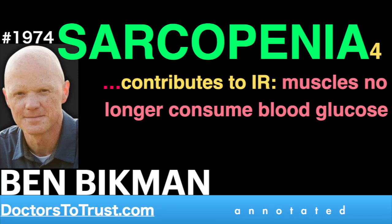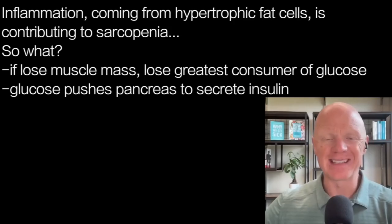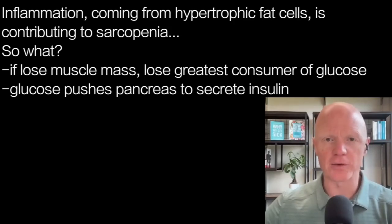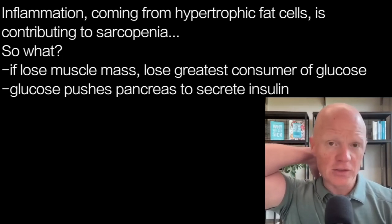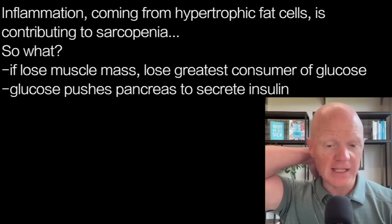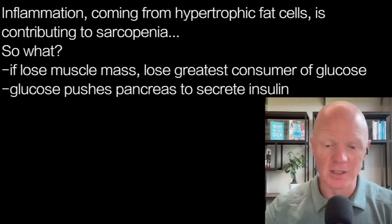Independent of insulin resistance, we have the overall metabolic milieu with the inflammation coming from the hypertrophic fat cell that is independently contributing to further sarcopenia. And why does all of this matter? If you start losing muscle mass, you start losing your greatest metabolic advantage.